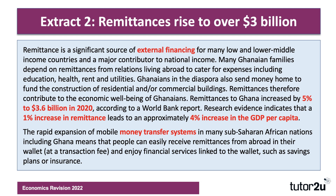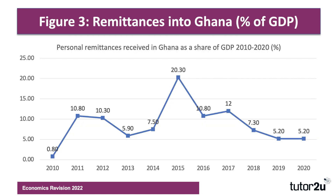The rapid expansion of mobile money transfer systems in many sub-Saharan African nations — places like Kenya, Ghana, and Nigeria — means people can easily receive remittances from overseas in their mobile wallet, although they do pay a transaction fee. That then allows them to enjoy basic financial services such as savings and insurance linked to the wallet. Figure three shows remittances into Ghana as a share of GDP — positive every year, peaking at over 20% in 2015, declining since but still positive.